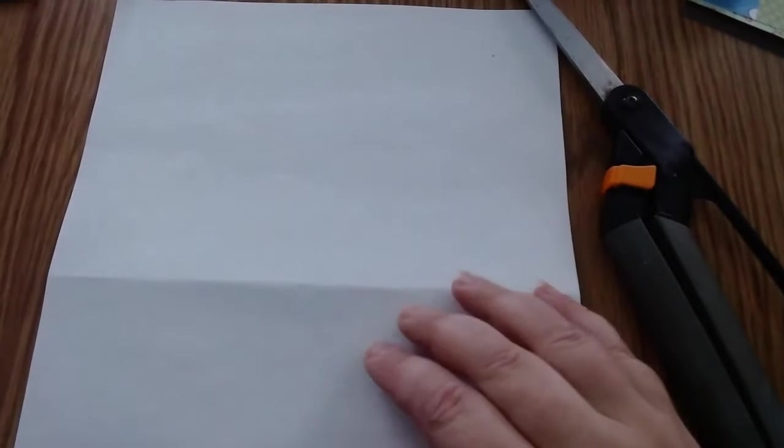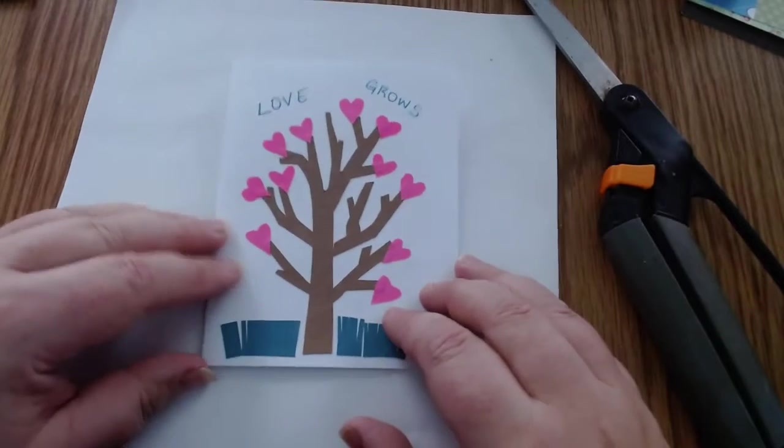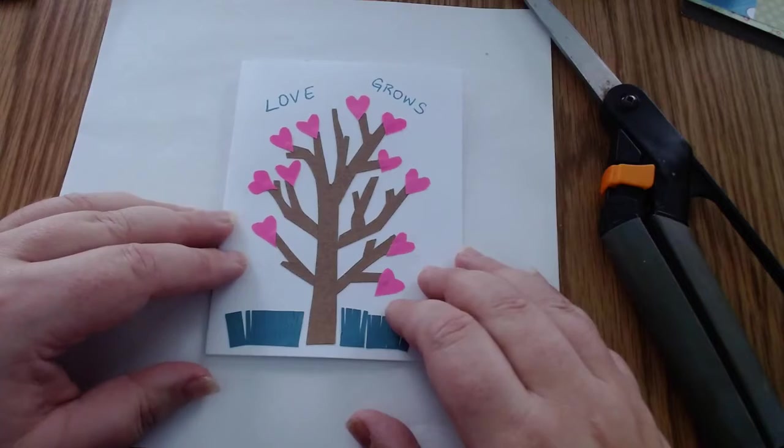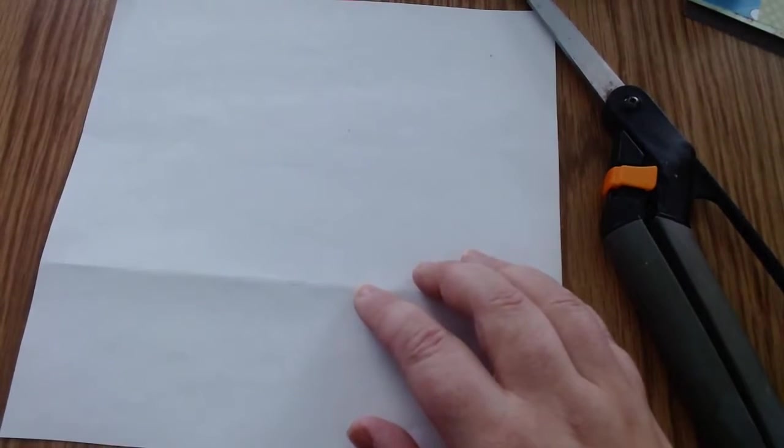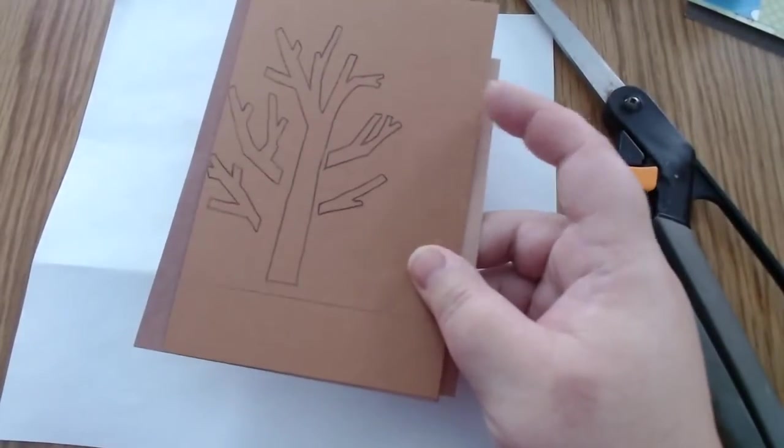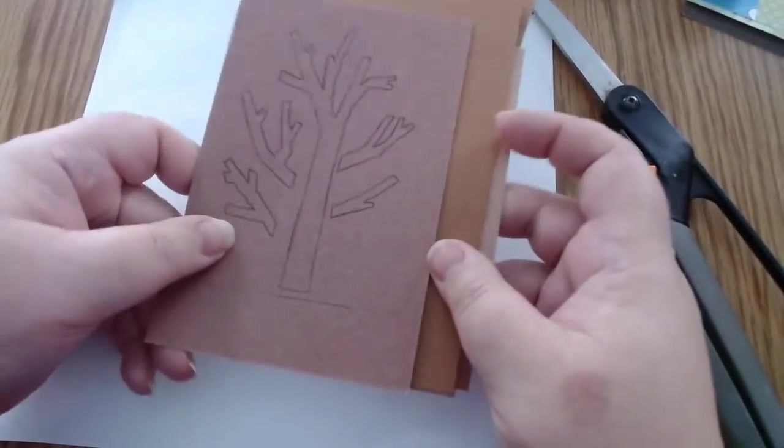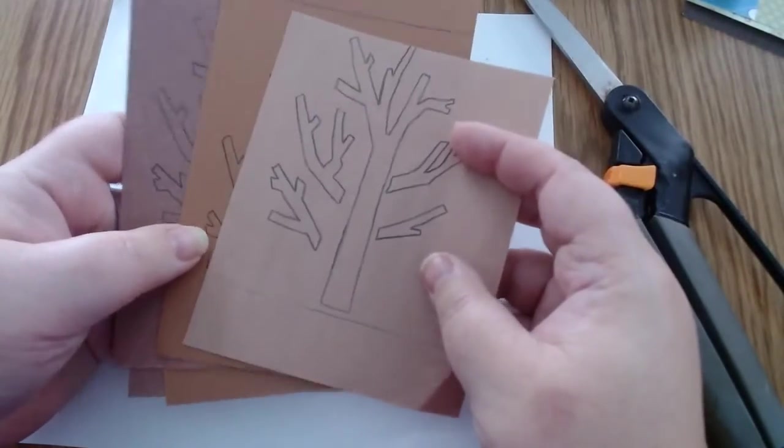To get started, we're going to start by making this tree on the front of one of our cards. So the first thing we're going to do is find in your kit, you have four brown papers that have a tree printed on them. So pick one, you don't have to use all these trees. They're just for example.